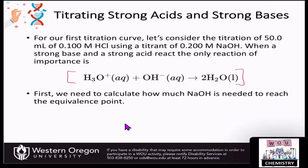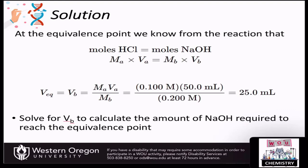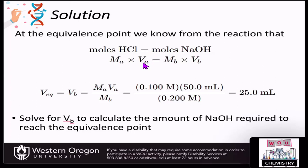First, we need to calculate how much sodium hydroxide is needed to reach the equivalency point. At the equivalency point, the moles of HCl must equal the moles of NaOH — this is our neutralization point. We can use the expression moles = molarity × volume in liters to represent the moles of each species.